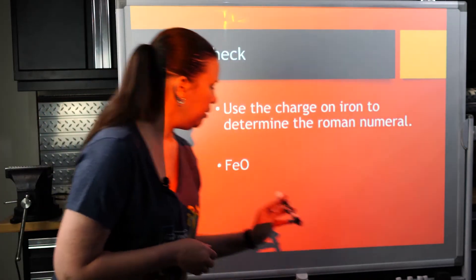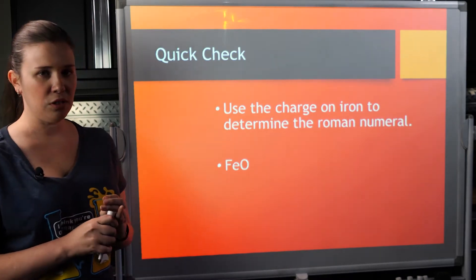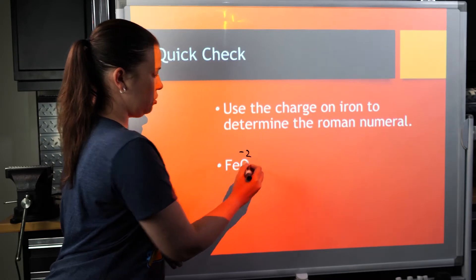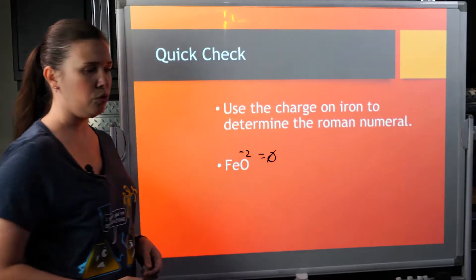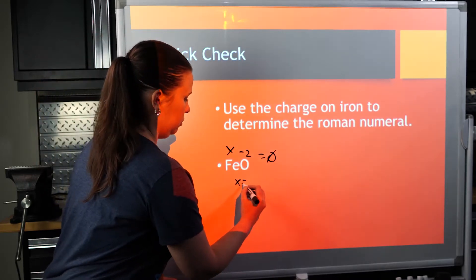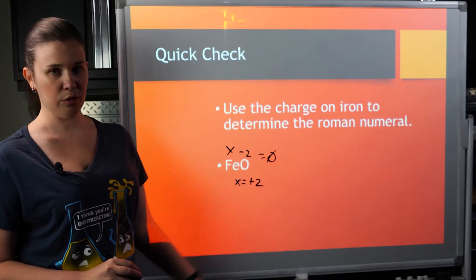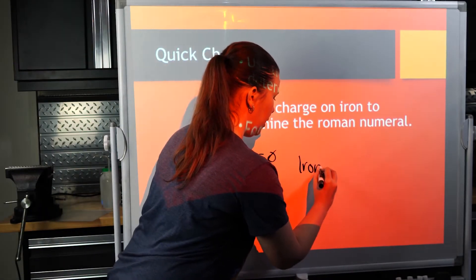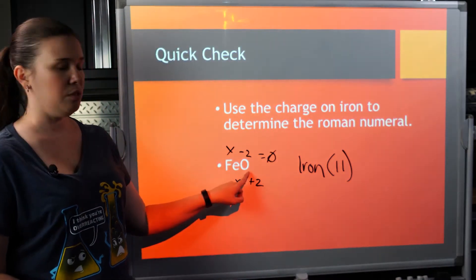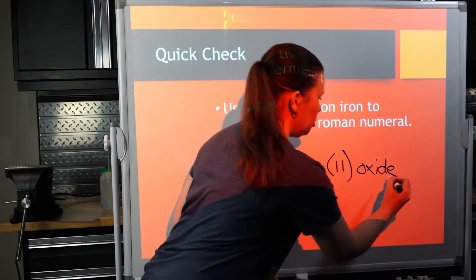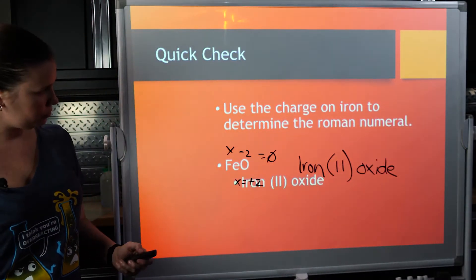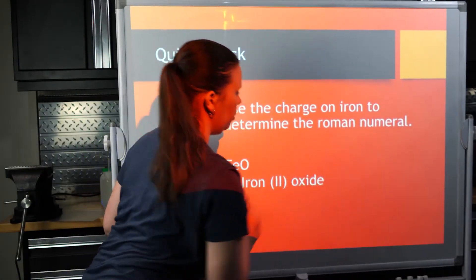Let's try one. We've got iron bonded to oxygen. The first thing I need to do is figure out the charge on the iron so I know what the Roman numeral is going to be — it's dependent on the oxygen charge. Oxygen has a minus 2 charge, and the entire compound is supposed to be neutral. So what would iron need to be to cancel out the oxygen charge? Plus 2. That plus 2 cancels with the minus 2 to make the neutral molecule. So when we name it, we write iron, the Roman numeral II in parentheses, and then oxide — so FeO would be named iron(II) oxide.